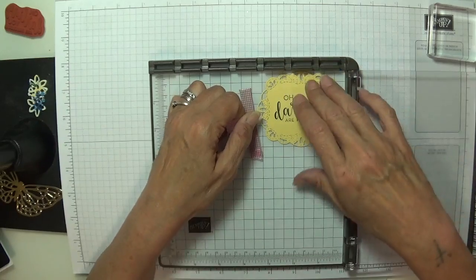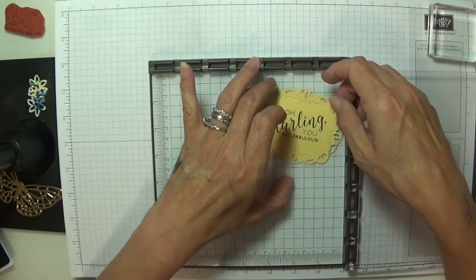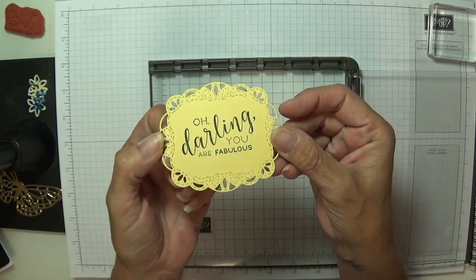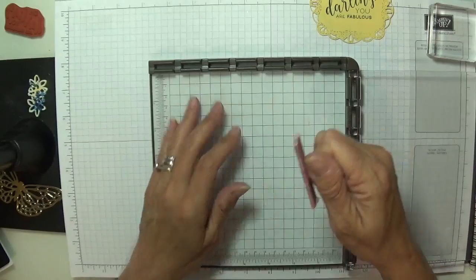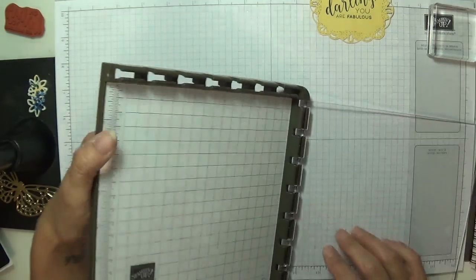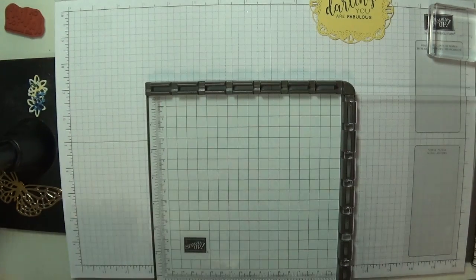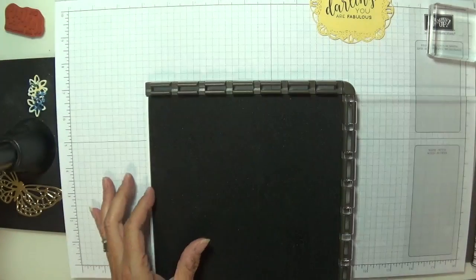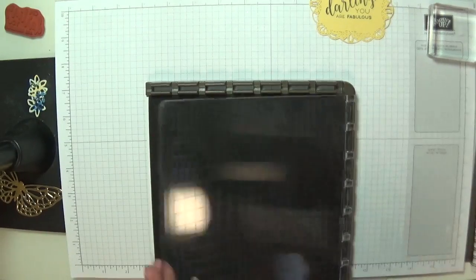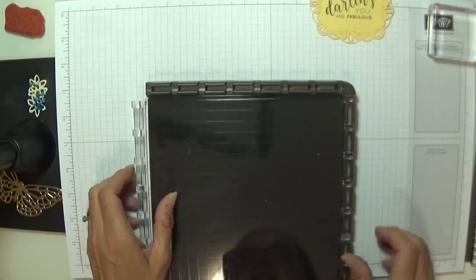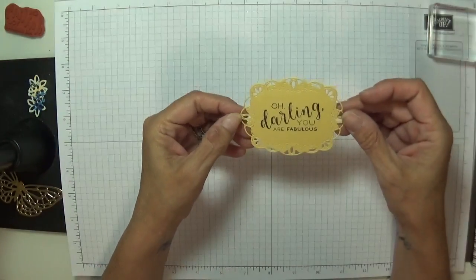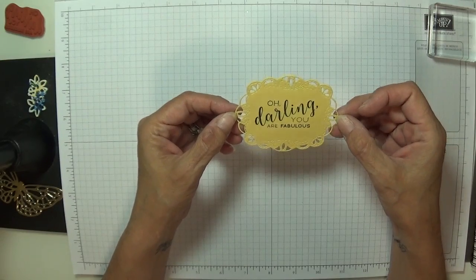That is fabulous. Absolutely fabulous. And that's all the Stamparatus there is. But well worth getting that out just for this. That is really strong magnet. And I mean strong. Look, that's a lot better. I keep my instructions in there, under there, just to give it an extra shim for when I'm using photopolymer.